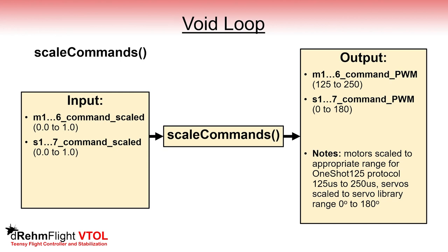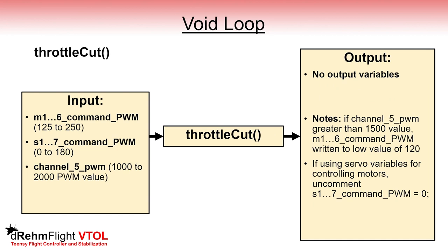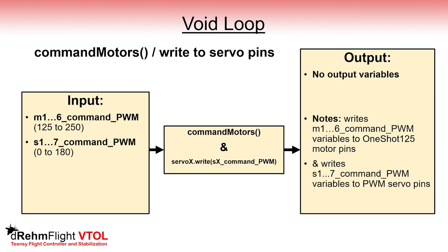Next up in the void loop after the control mixer, we call the scale commands function which takes those motor and servo command scaled variables and uses them to update the motor and servo command PWM variables. These new variables are simply scaled to an appropriate range so that they can be written out to the corresponding microcontroller pins. Next we call the throttle cut function, which is intentionally done right before writing the commands out to the actuator pins as a last check for safety. The radio receiver channel 5 variable is used to set the motor command PWM variables to a minimum value if it's above a value of 1500, preventing the motors from spinning unless the pilot allows it.